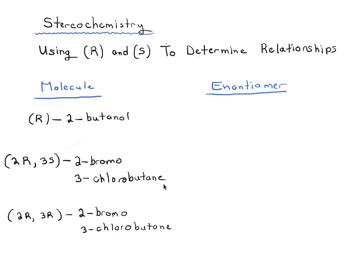In this video we're going to go through how to use R and S to determine the relationship between different molecules — whether they're going to be enantiomers or diastereomers. I've drawn a couple of names of molecules here. We're not going to draw out any structures, just the names, and based on the names alone, see if you can write out what the enantiomer of each molecule would be.